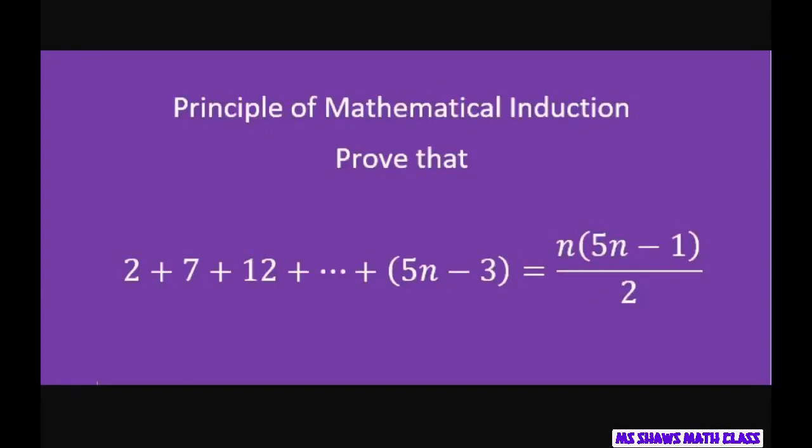Hi, everyone. We're going to use the principle of mathematical induction to prove that 2 plus 7 plus 12 plus dot dot dot plus 5n minus 3 equals n times 5n minus 1 divided by 2. And this is for all positive integers.